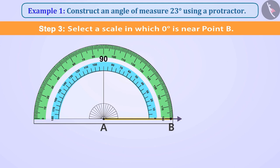Absolutely right! We will see a scale on which zero degree is near point B. In this way, we will consider line AB as zero degree. Moving on this scale, we will see at which place 23 degree section falls. We will mark point C in front of this.